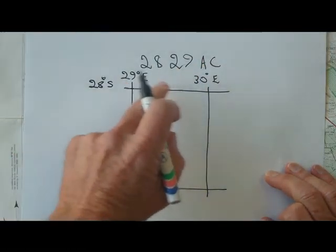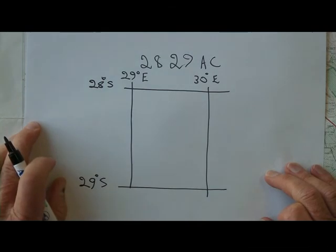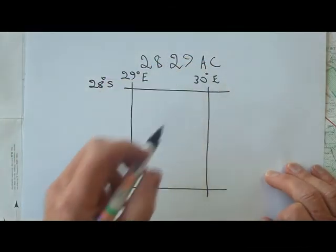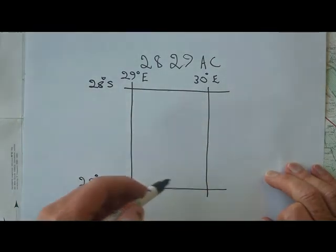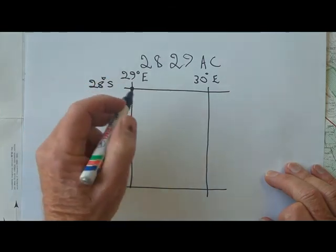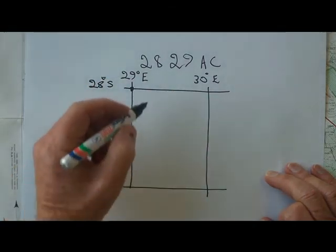And the eastern edge over here is defined by 30 degrees east, getting larger away from Greenwich. Now, this is not the area of our map. The AC defines the area of our map within this one degree rectangle. So the 28, 29 refers to that point there, and it then defines that rectangle.